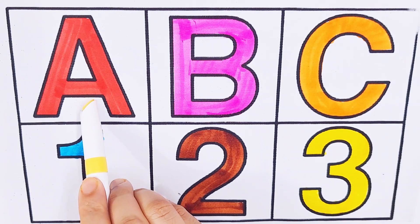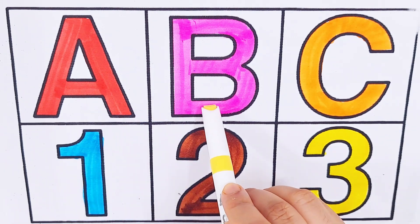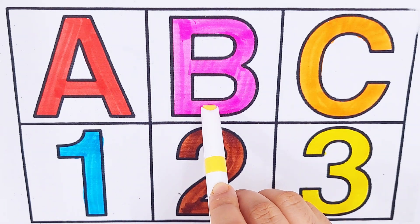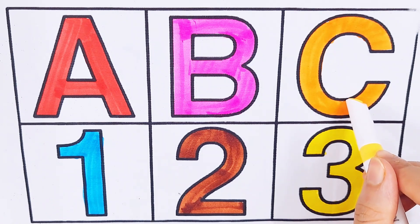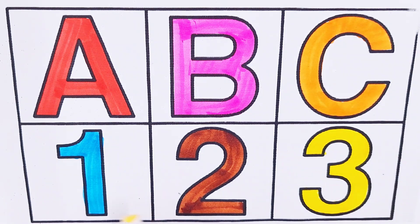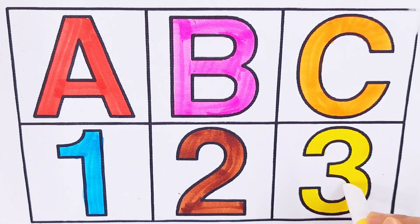A, A for apple. B, B for ball. C, C for candy. Number one, number two, number three.